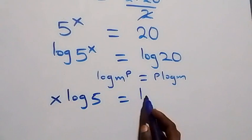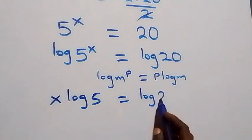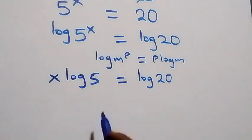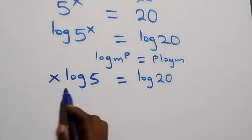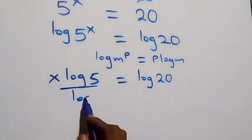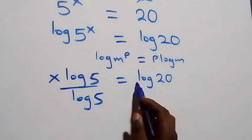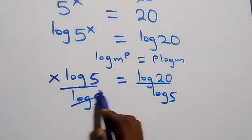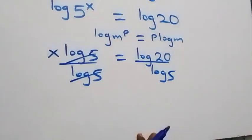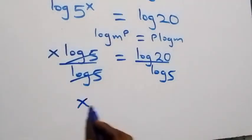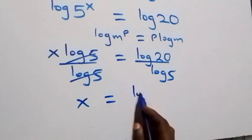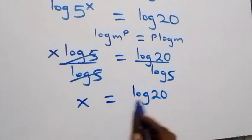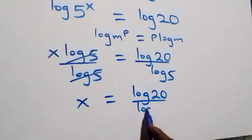We have x log 5 equals log 20. The next step: we divide both sides by log 5. Log 5 cancels on the left, and we have x equals log 20 over log 5.